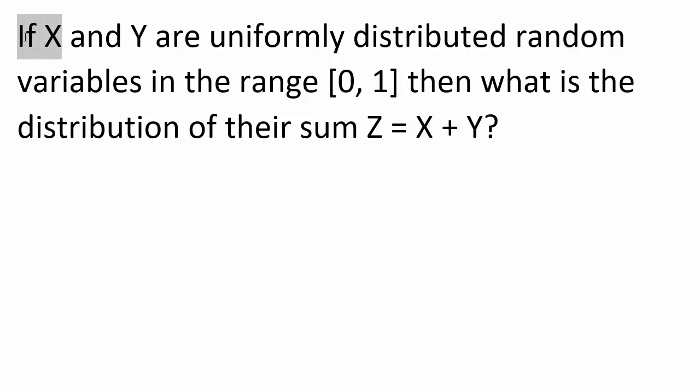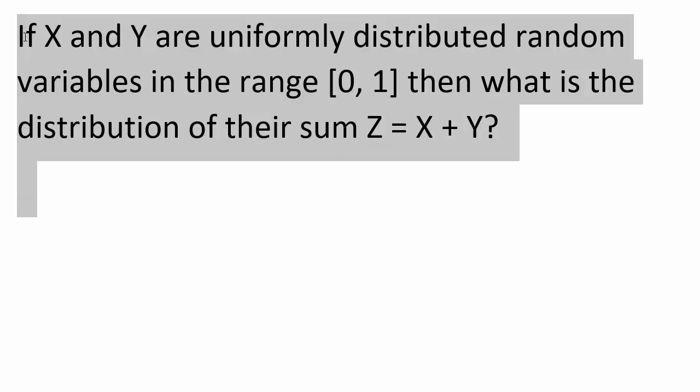If X and Y are uniformly distributed random variables in the range 0 to 1, then what is the distribution of their sum Z equals X plus Y? This question has been covered in many other videos and tutorials.